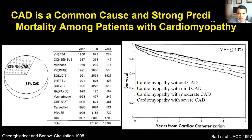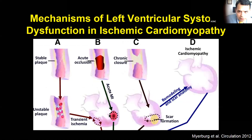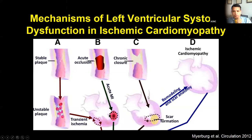Coronary artery disease is a common cause of cardiomyopathy and a strong predictor of mortality. Studies have shown that in patients with LV systolic dysfunction, those with more coronary disease have worse outcomes. Ischemic cardiomyopathy has a significant adverse impact. Mechanisms include plaque rupture leading to acute MI, repetitive ischemia leading to LV systolic dysfunction, or chronic occlusion decreasing myocardial perfusion, leading to adverse remodeling and cardiomyopathy.